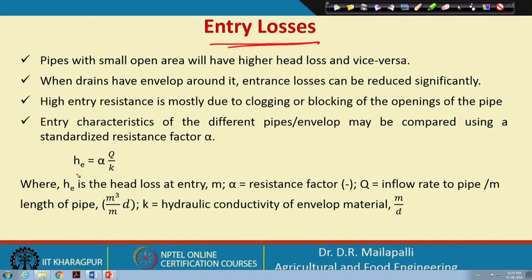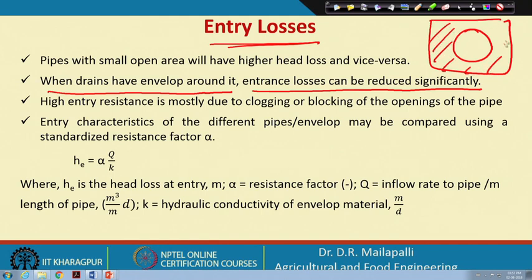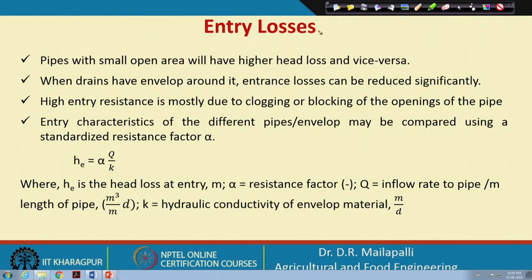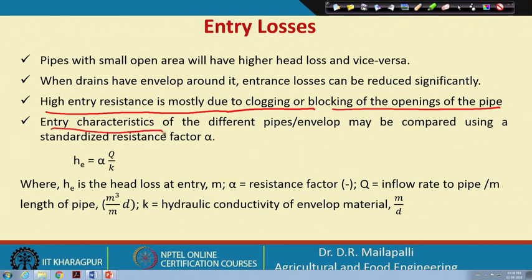Entrance losses are important when designing a drainage system. When drains have an envelope around them, entrance losses can be significantly reduced. The envelope allows water to enter from the top and reach the slots more gradually, reducing entrance losses. High entry resistance is mostly due to clogging or blocking of the pipe opening, which increases head losses.